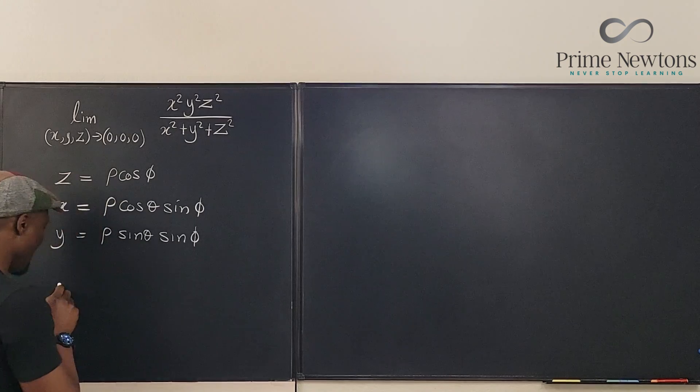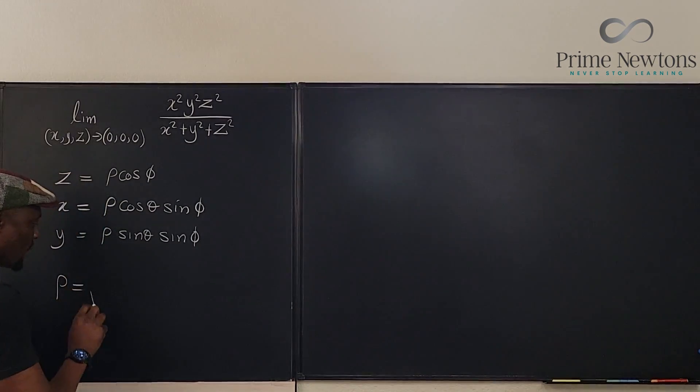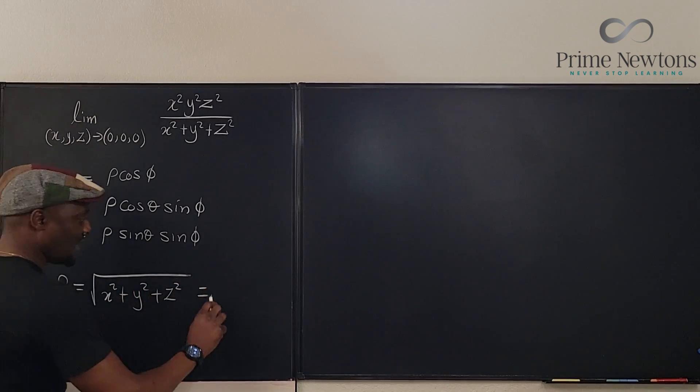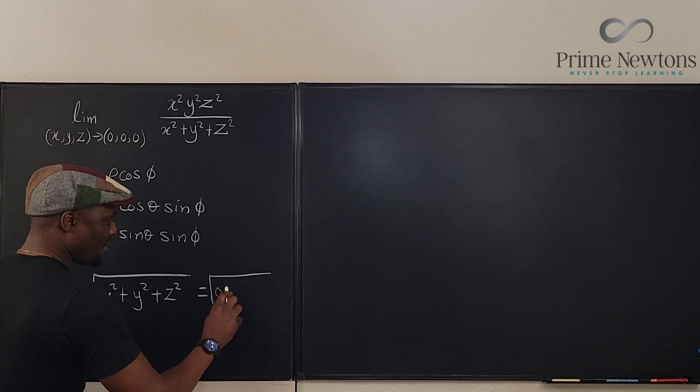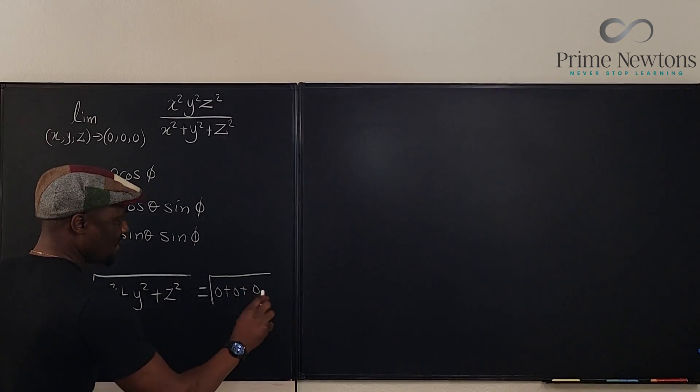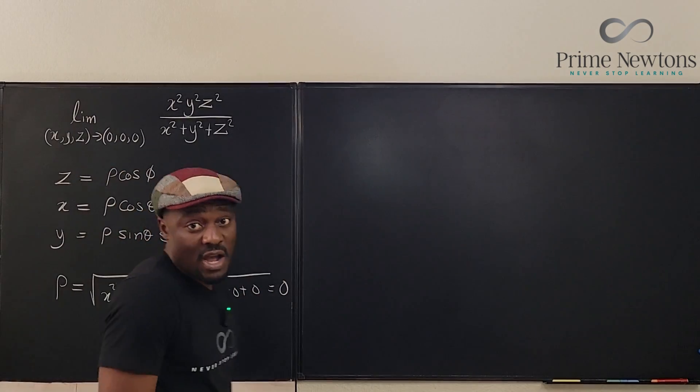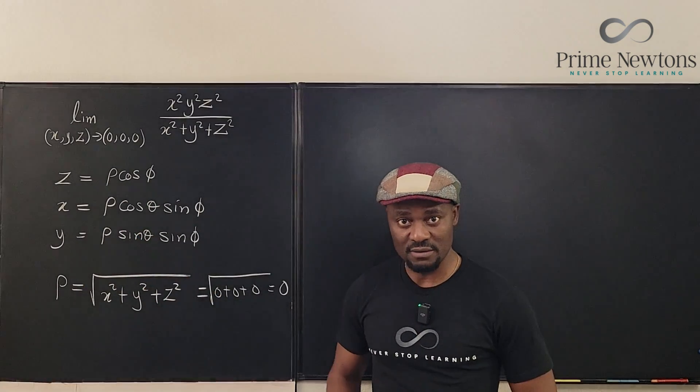Well, we know that our radius is equal to the square root of x squared plus y squared plus z squared, which in this case is the square root of zero plus zero plus zero, which is equal to zero. So we're going to be using zero as the value of rho. That's all we need to do.